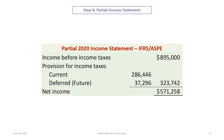Begin with income before income taxes using the accounting income of $895,000. Within the provision for income taxes section, include current income tax expense of $286,446 — arrived at in step one. From the deferred or future tax calculations, include deferred/future tax of $37,296. The total provision for income taxes is $323,742, resulting in final net income of $571,258.